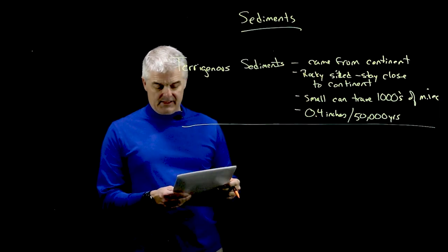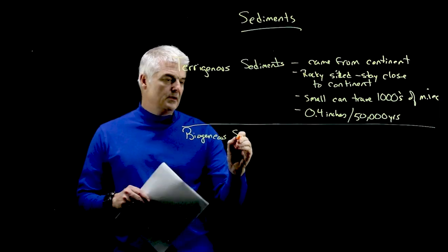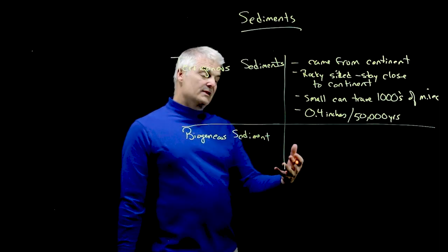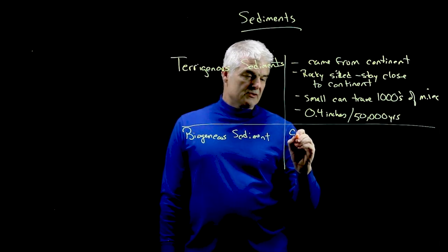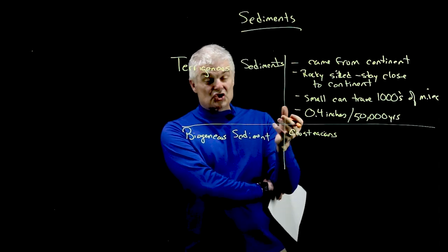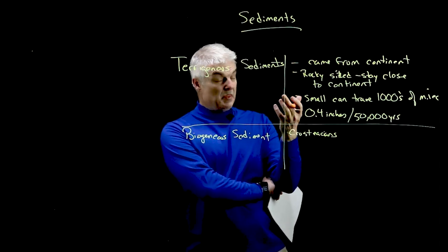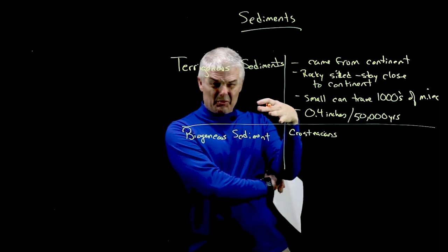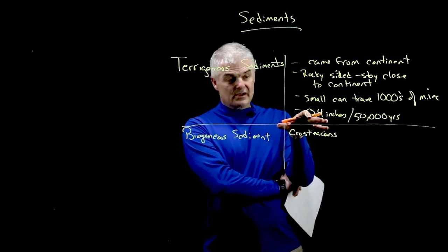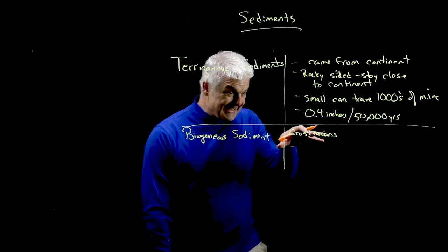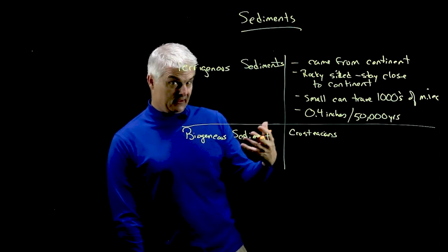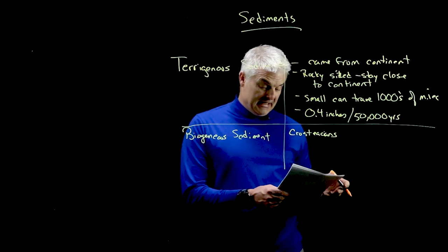The second one is biogenous sediments. Biogenous — from living things. Most of this is from dead crustaceans, like shellfish. They die, they sink, and their shells sink with them. So at the bottom of the ocean there are places with lots and lots of dead shells — the shell had a living thing in it at one time. And that's pretty cool.